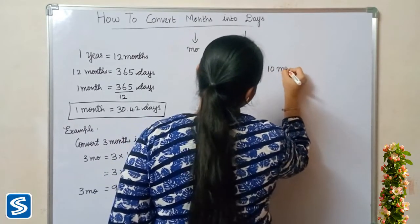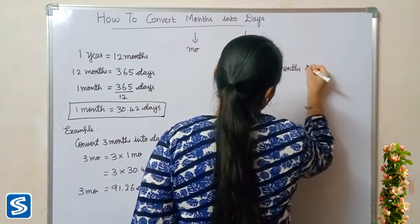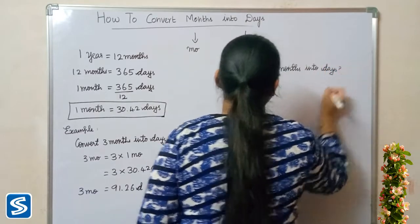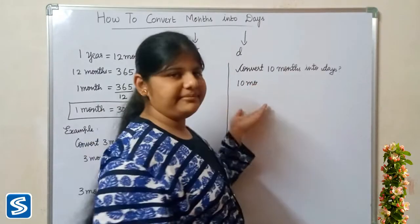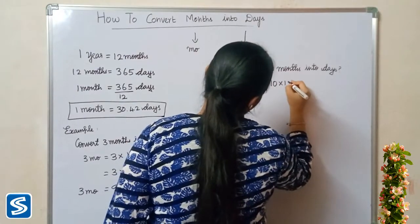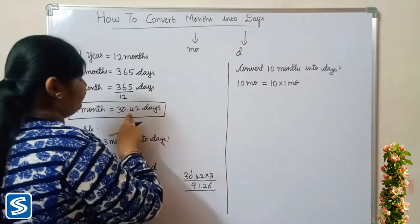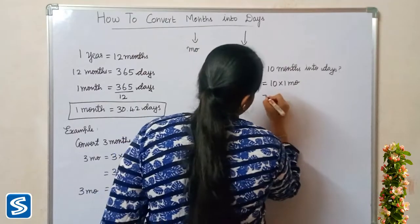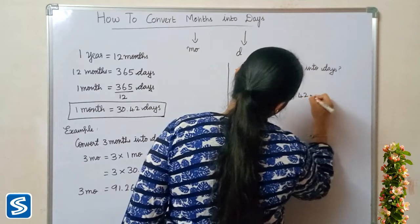Next example: convert 10 months into days. 10 months can be written as 10 multiplied by one month. We substitute 30.42 days in the place of one month, so 10 multiplied by 30.42 days.